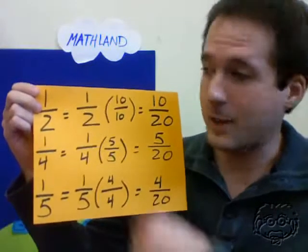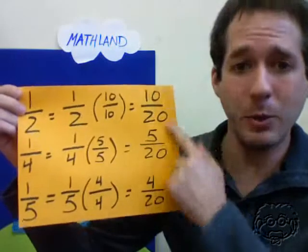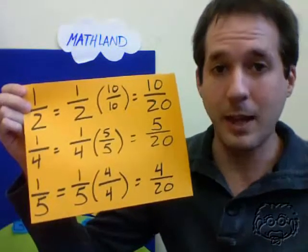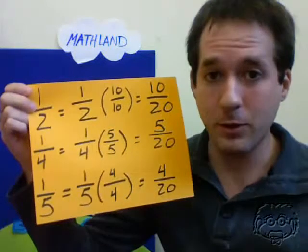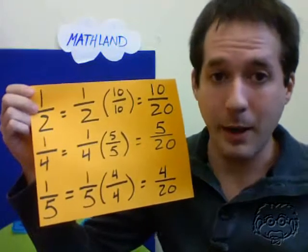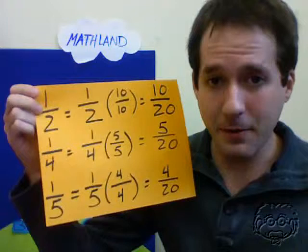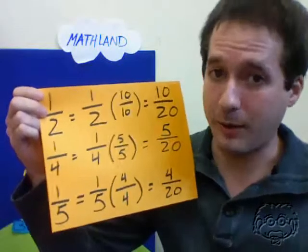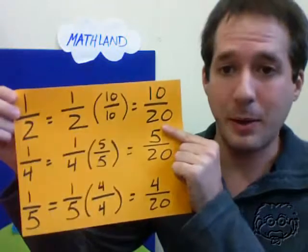So we've rewritten these three fractions as three equivalent fractions with a least common denominator. We did it by first finding the least common denominator and then expressing each fraction as an equivalent fraction with the denominator we found, 20.